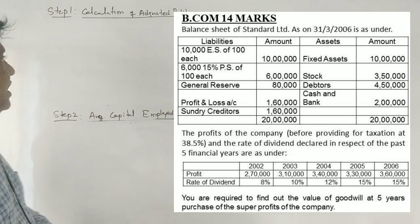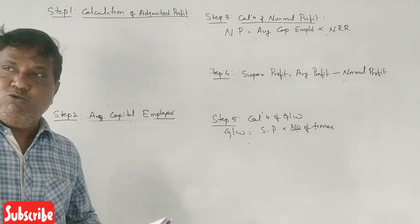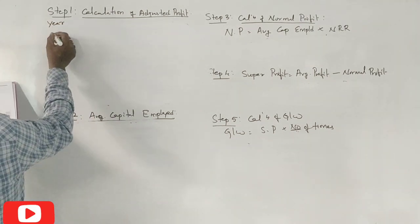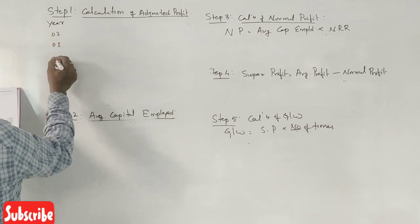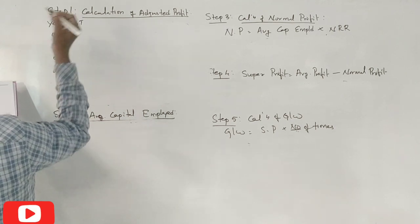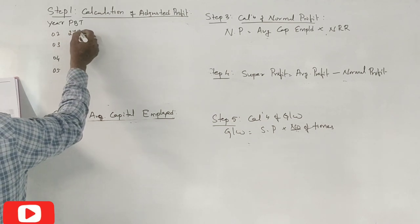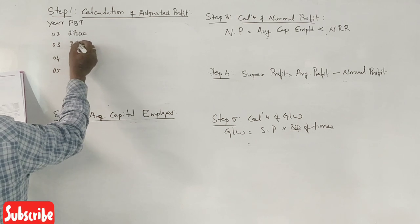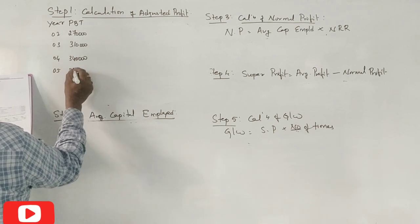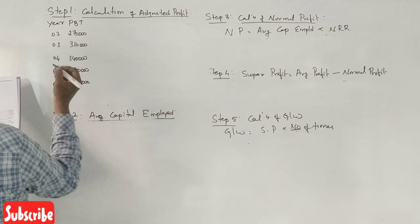First of all, adjusted profit. One point: investment is there. First of all, create a table with years 2002, 2003, 2004, 2005, 2006. First row is profit before tax: 2,70,000, 3,10,000, 3,40,000, 3,30,000, 3,60,000 for the 5 years.